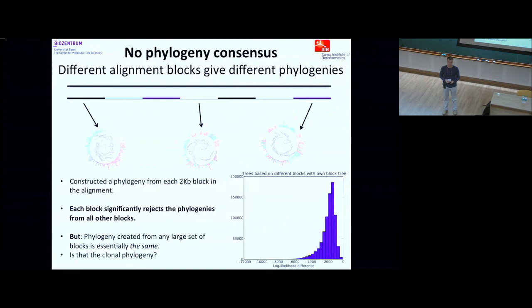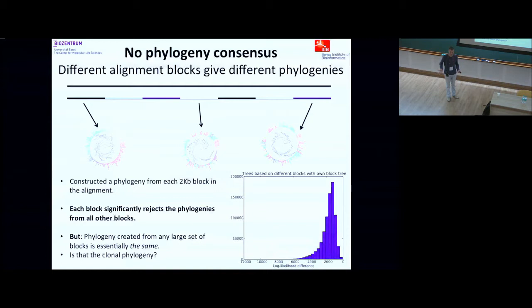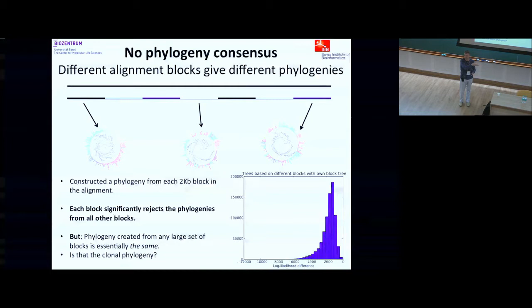Different subsets give you the same tree. My understanding is that this tree you get from a large number of blocks is the clonal phylogeny — the phylogeny of cell divisions. Many people believe that horizontal transfer of genes causes each individual block to give a different phylogeny, but once you take enough blocks this averages out and you recover the clonal phylogeny. What I'm going to examine is: do I really believe that is true?